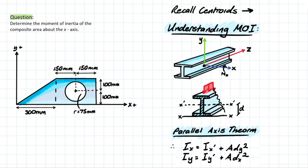Moment of inertia actually refers to the cross-section's resistance to bending. Our I-beam happens to be very well suited to resist bending about the x-axis, because a key rule to having a strong moment of inertia is that the further a material is spread from your respective axis, the stiffer the cross-section will be.